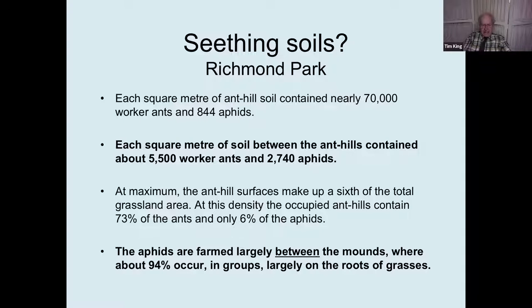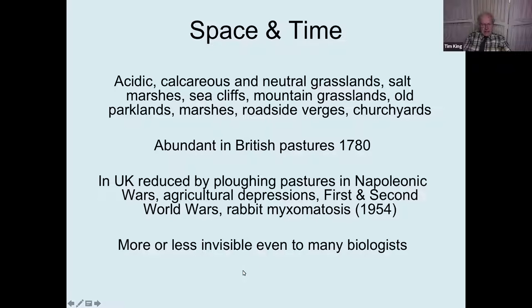At maximum, the anthill surfaces make up a sixth of the total grassland area, and occupied anthills contain 73% of the ants, meaning 27% are between the anthills. The aphids are farmed underground — the ants' main source of diet. You don't see the ants because they mainly build at night after rain, and you don't see the aphids because they're on the plant roots. But they're there all the time: 94% of the aphids occur between the anthills, largely on the roots of grasses — massive seething soils.